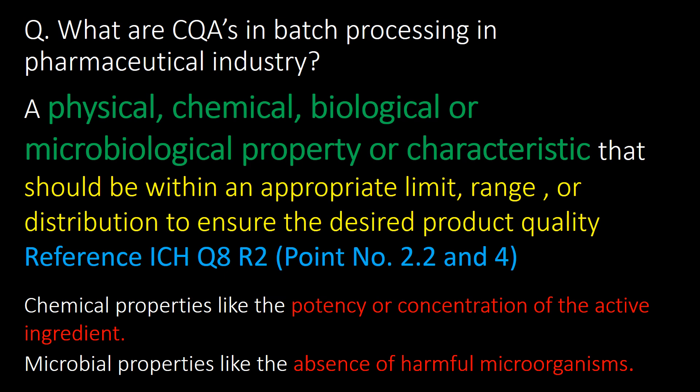What are CQAs in batch processing in the pharmaceutical industry? A CQA is a physical, chemical, biological, or microbiological property or characteristic that should be within an appropriate limit, range, or distribution to ensure the desired product quality. Some examples are chemical properties like the potency or concentration of active ingredient, and microbial properties like the absence of harmful microorganisms.